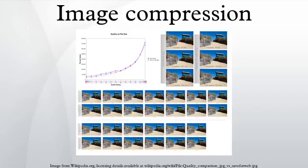Methods for lossy compression: reducing the color space to the most common colors in the image. The selected colors are specified in the color palette in the header of the compressed image. Each pixel just references the index of a color in the color palette. This method can be combined with dithering to avoid posterization.